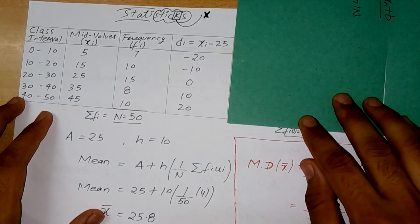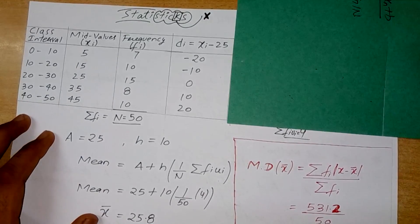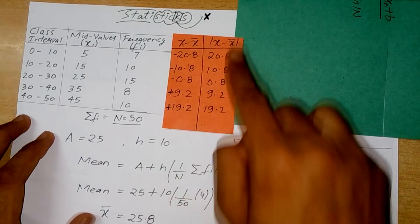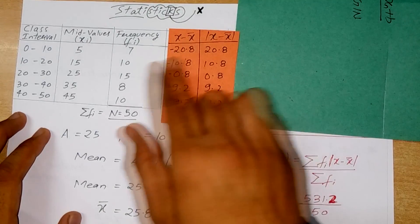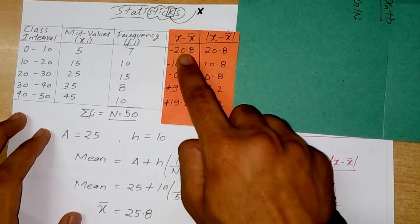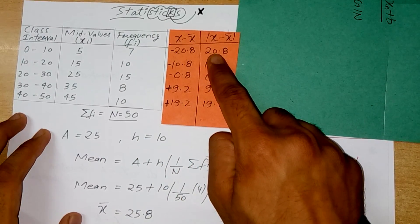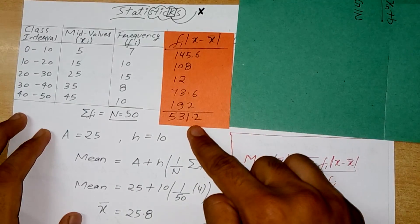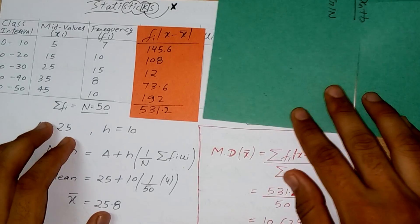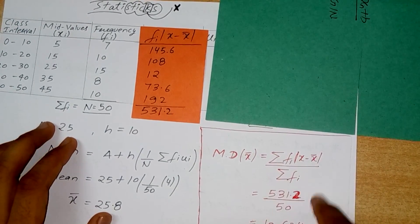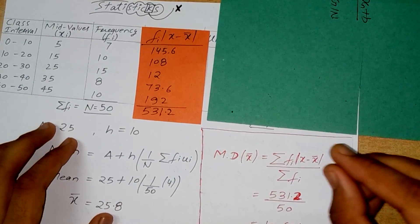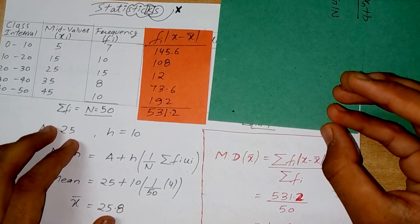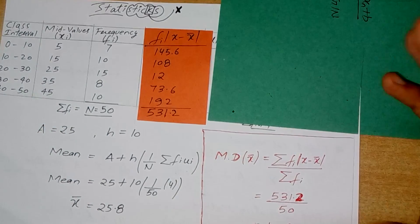We calculate |x_i − x̄| for each value, multiply by the corresponding frequency to get f_i·|x_i − x̄|, sum these values, and use that sum in the formula to get the mean deviation. The key thing to remember is that x̄ can be replaced by the median, mode, or mean, and B can take any value given in the question.